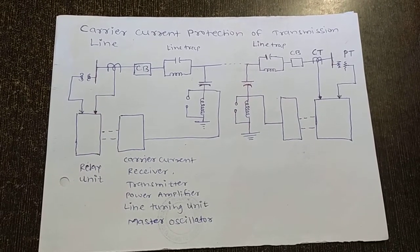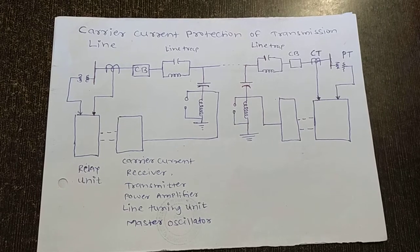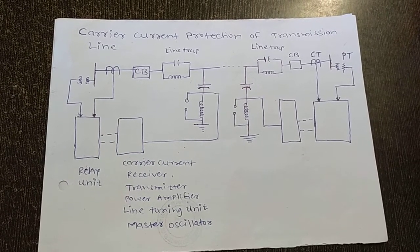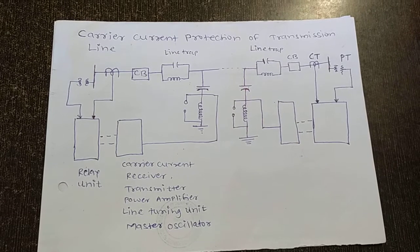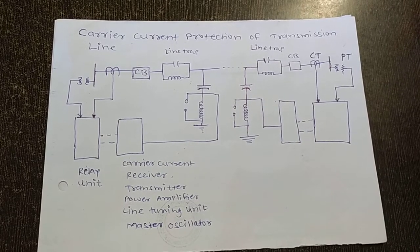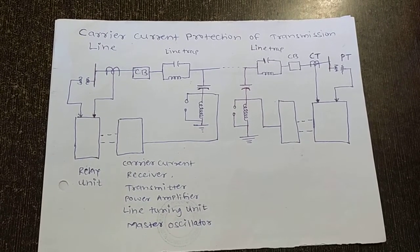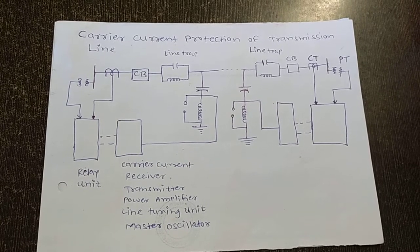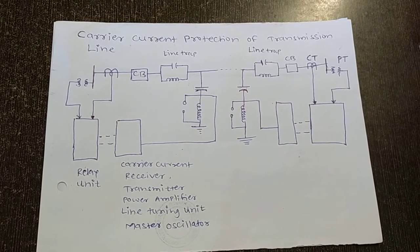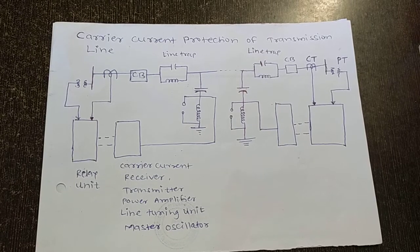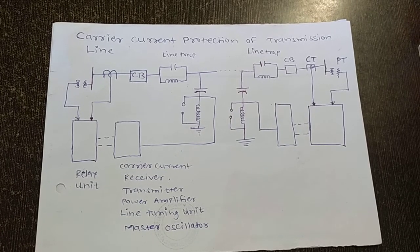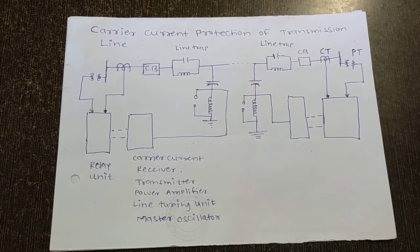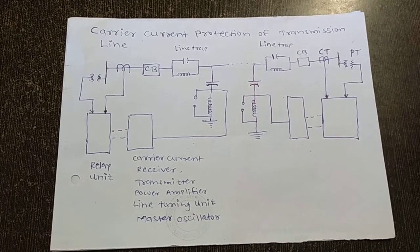The second element is the line trap. As seen in the image, it is inserted between the bus bar and the connection of the coupling capacitor to the line. It is a parallel-tuned LC circuit that has low impedance to the 50 Hz signal and high impedance to the carrier frequency. This unit prevents the high frequency signal from entering neighboring lines, so carrier current flows only in the protected line.